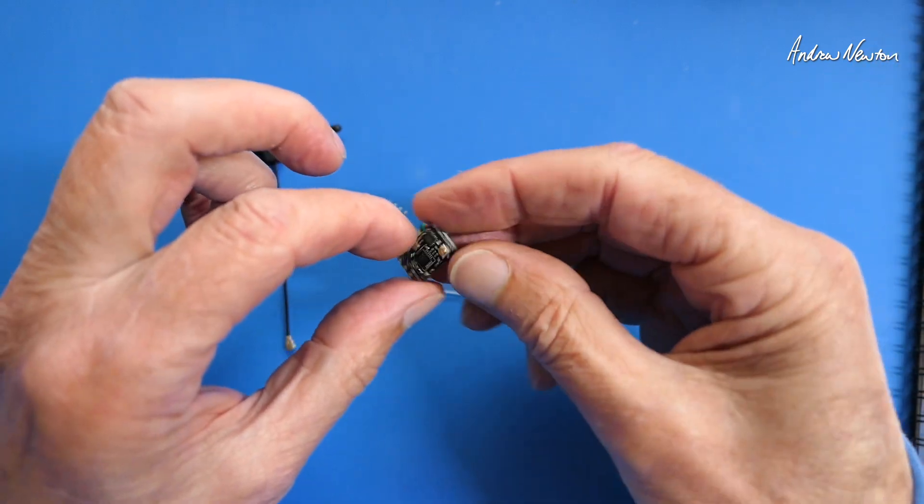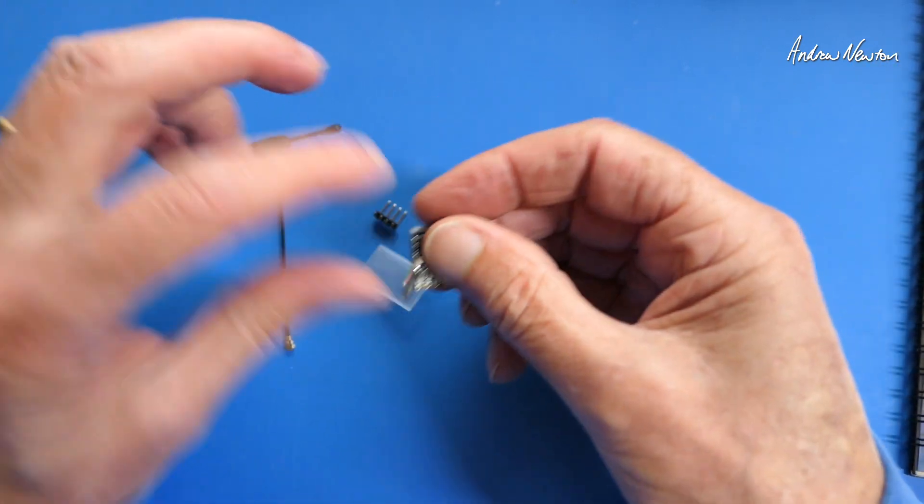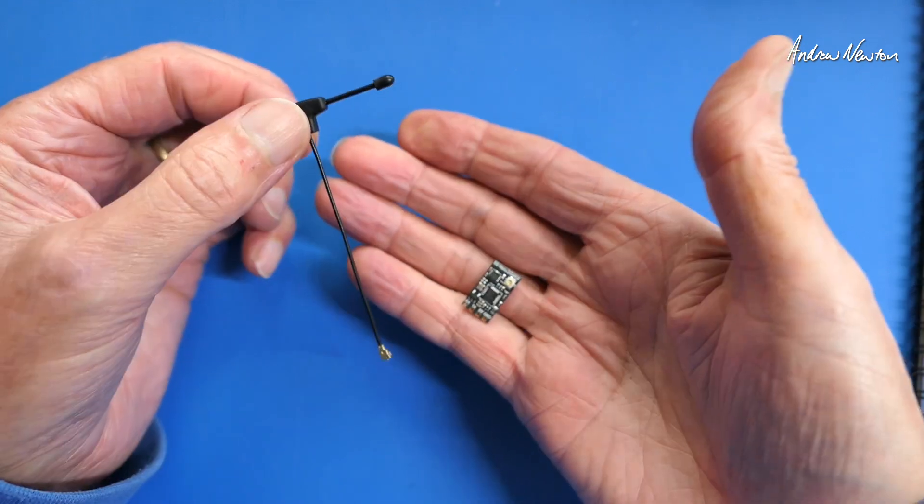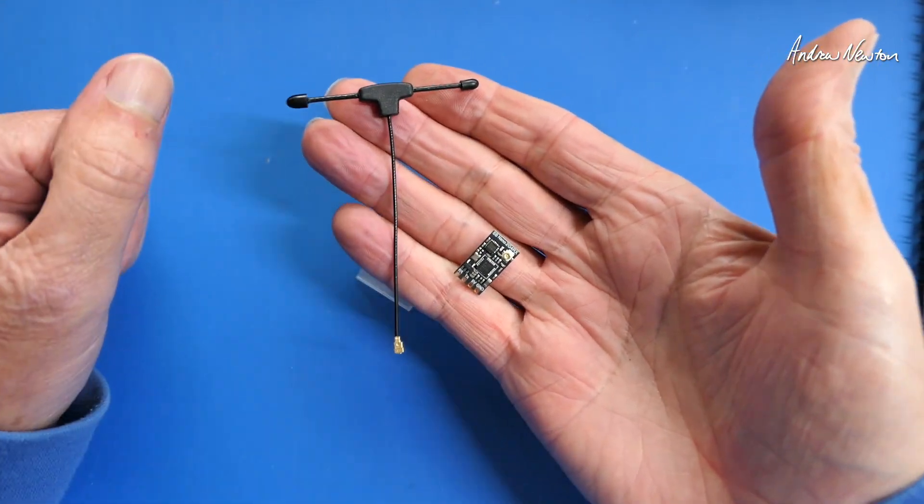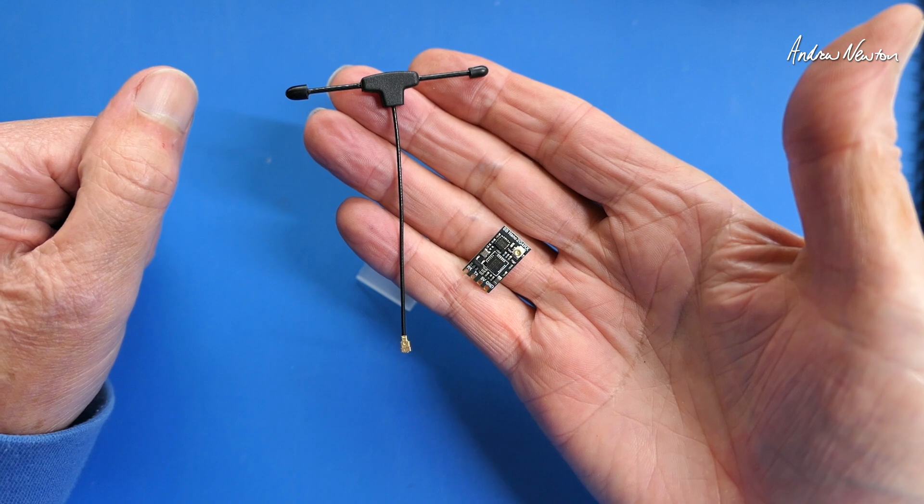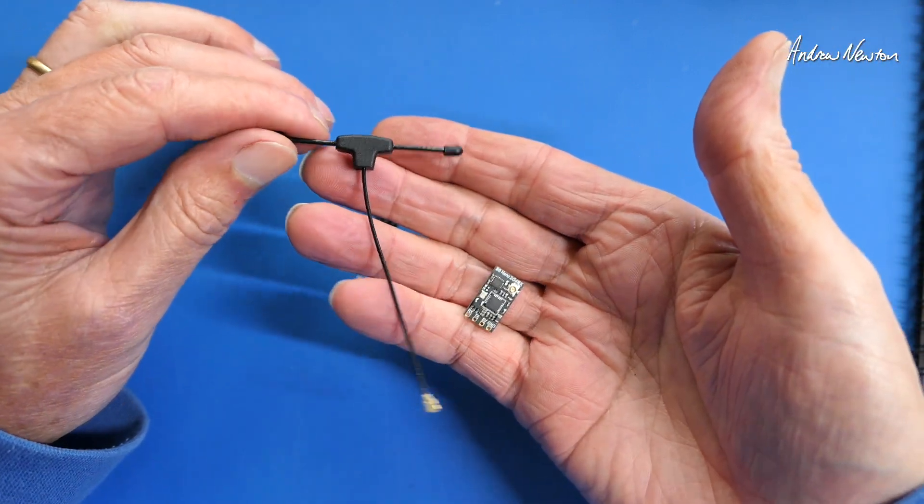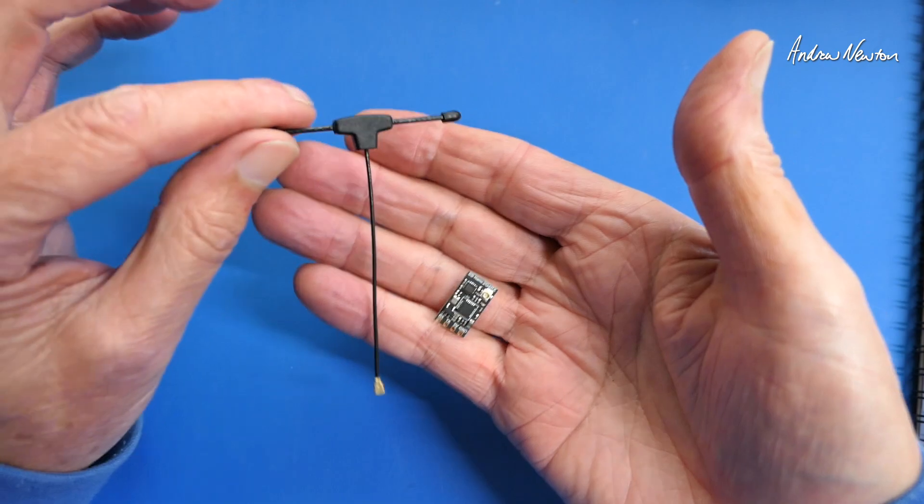What I'm going to do first is solder it up and put it together, and then we will compare it to some of the other receivers around, have a look at the manual and the websites, and then I'll bind it up and show you some of the selections in the Lua script. So anyway, let's go and put it together right now.